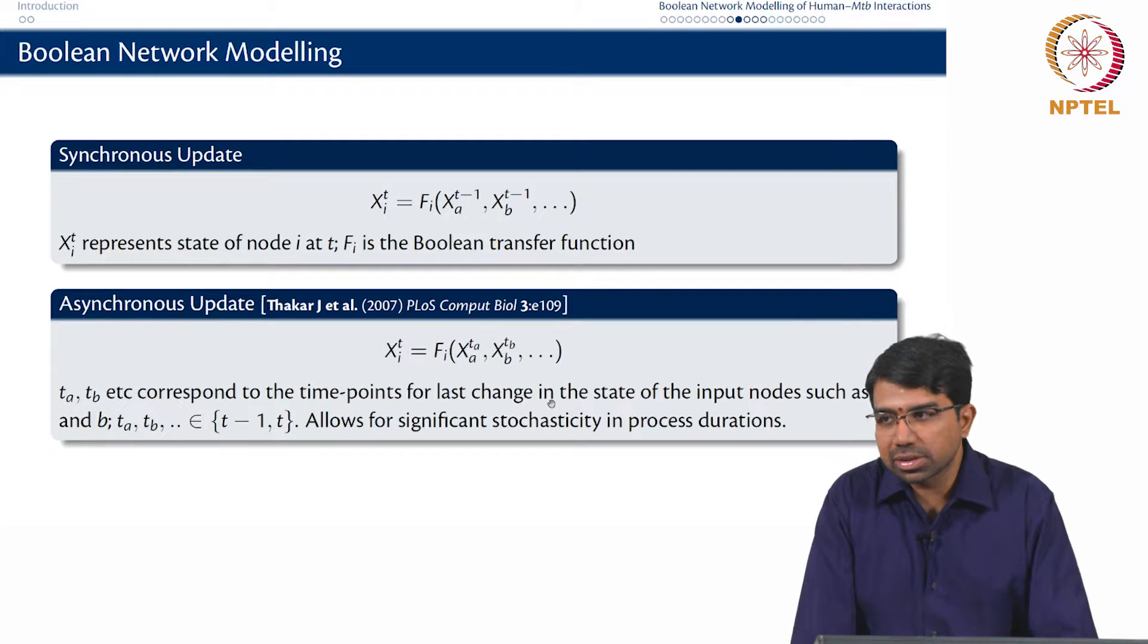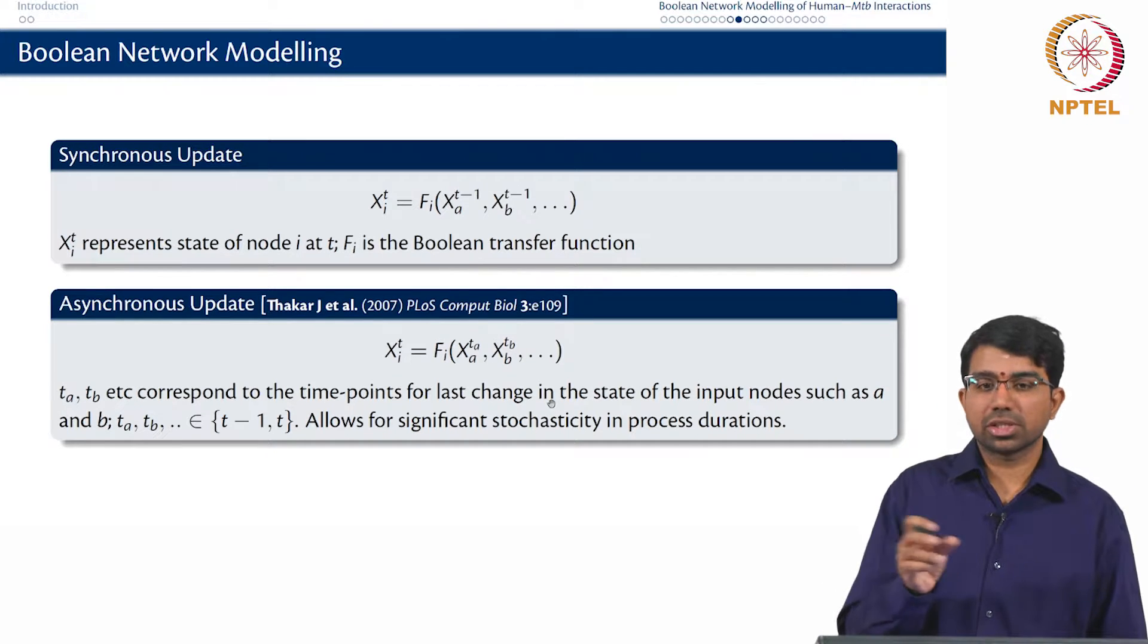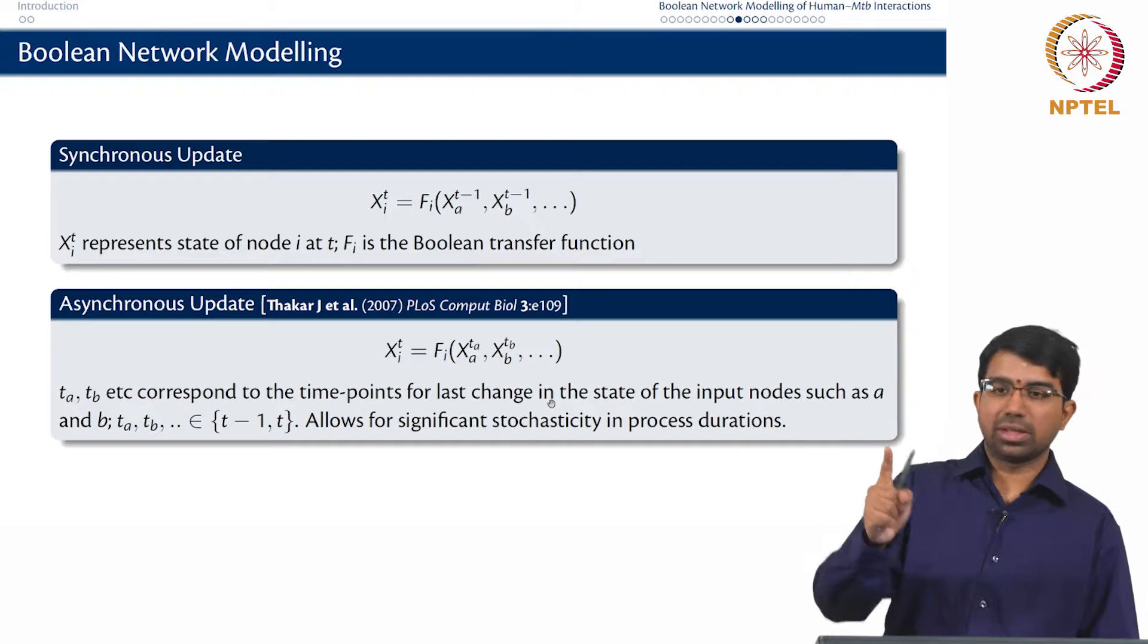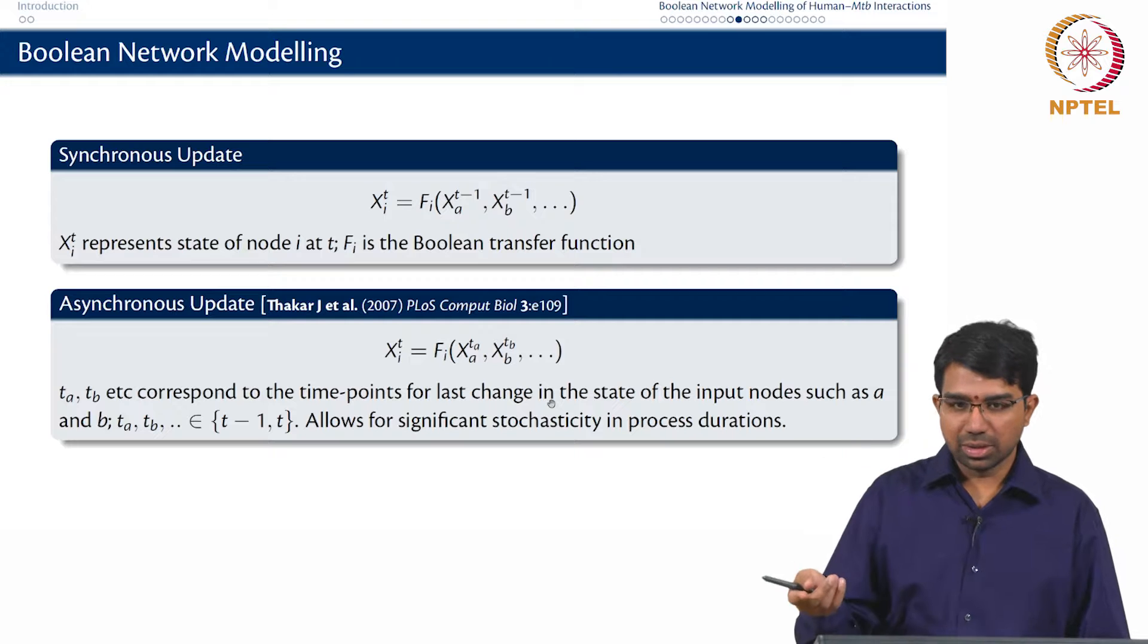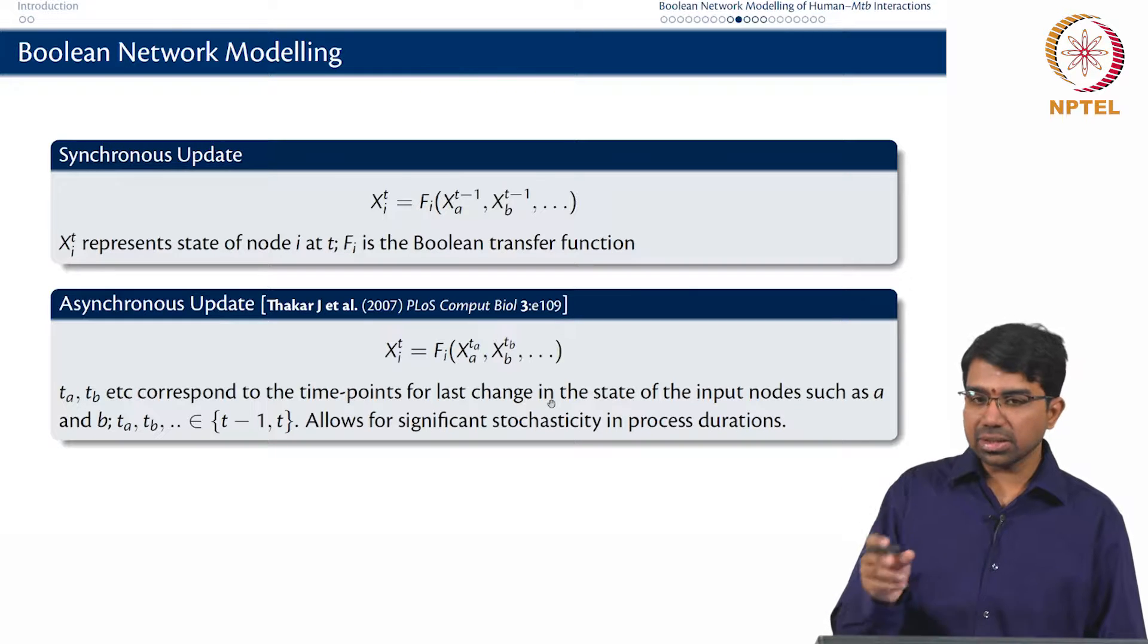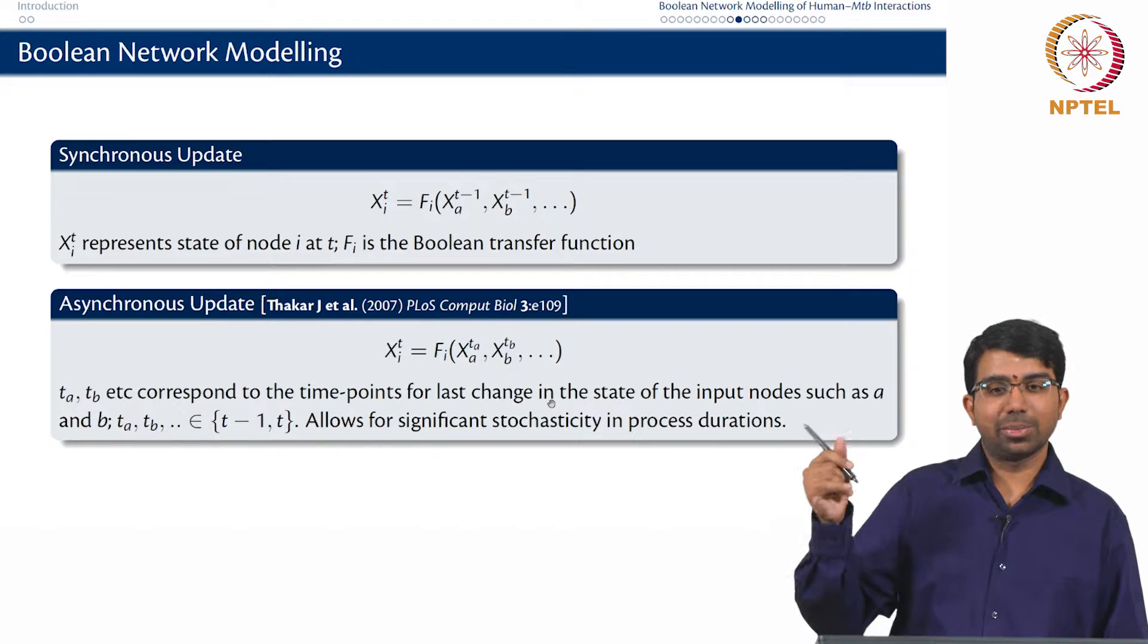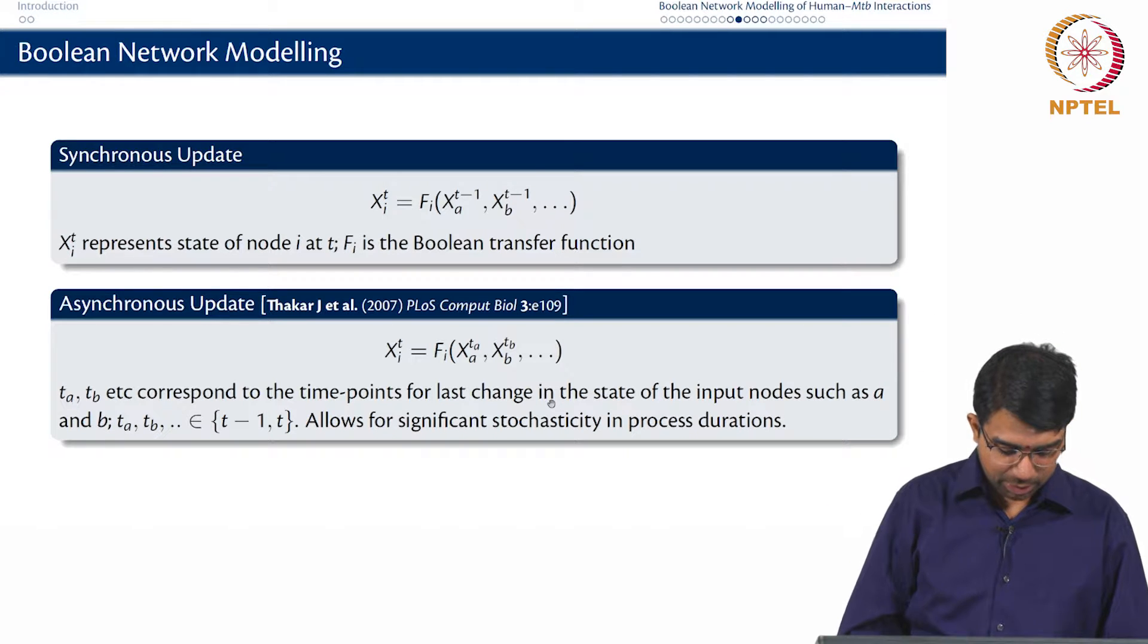When does one go in for synchronous update versus asynchronous? Asynchronous gives you a lot more stochasticity in process duration. You can have processes that are relatively more fast. Synchronous assumes that everything takes one time step to happen, be it antigen presentation or the macrophage binding to some cell. All that takes exactly one time step whereas the asynchronous allows for some more stochasticity. You can even have longer term memory. You can depend on something that was 5 steps previously, 3 steps previously, although we did not really do that here.